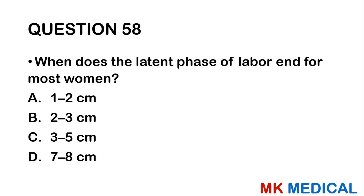Question fifty-eight: When does the latent phase of labor end for most women? A, 1-2 cm; B, 2-3 cm; C, 3-5 cm; D, 7-8 cm. Remember that transition from latent phase to active phase is usually when someone is 4 cm dilated — so between 3 to 5 cm.